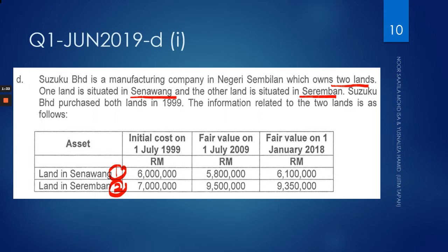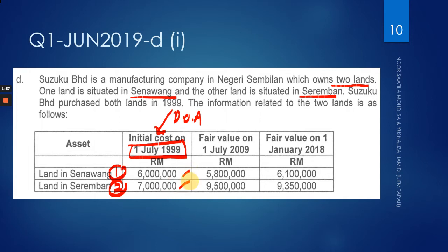Suzuku purchased both lands in 1999. The date of acquisition was 1st of July 1999. The initial cost on 1st of July was 6 million and 7 million respectively. You also have the fair value information on 1st of July 2009. For your information, this company adopts the revaluation model.